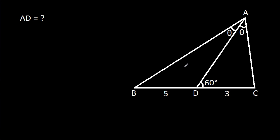In this video, we have been given that angle BAD is theta, angle CAD is theta, angle ADC is 60 degrees, BD is 5, CD is 3. We have to find AD.